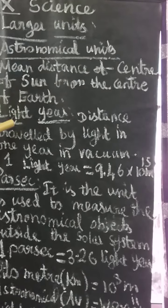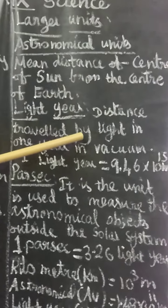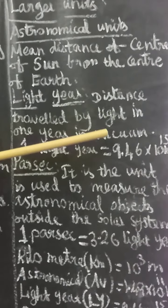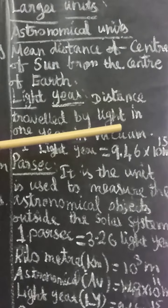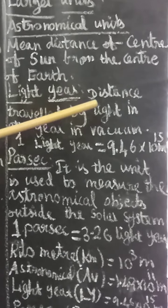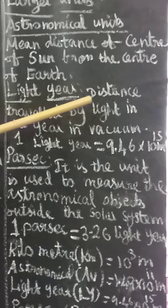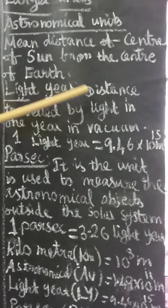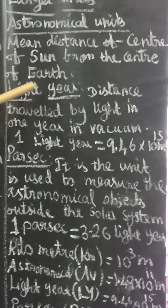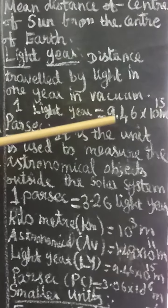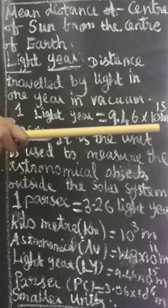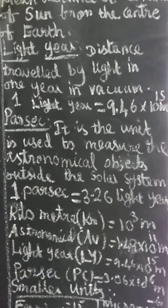The next larger unit is light year. The light year is the distance travelled by light in one year in a vacuum. Vacuum means there is no atmospheric air present. The value of one light year is 9.46 × 10 to the power 15 meters. Because of its 10 to the power 15 scale, it is called a larger unit.